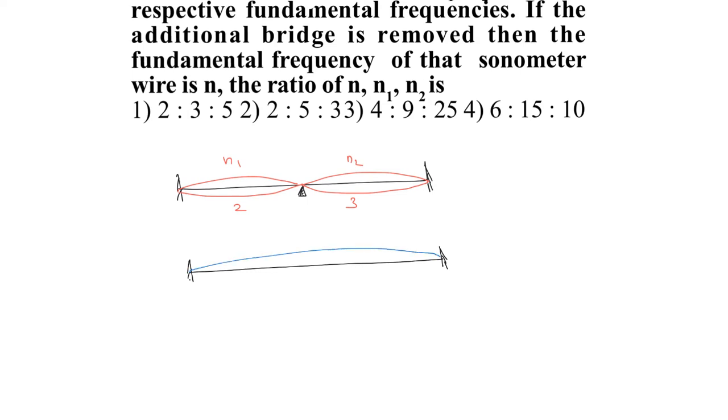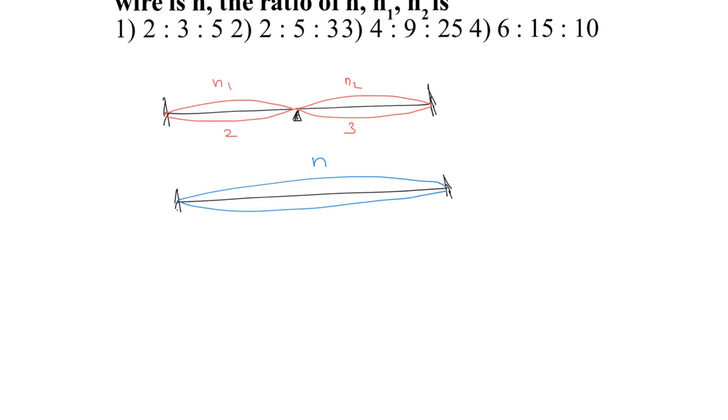If it is oscillating in one loop, then its frequency is n. We need to find the ratio of n, n1, and n2. We know the equation for fundamental frequency: if it is oscillating in one loop, the frequency is v divided by 2l.